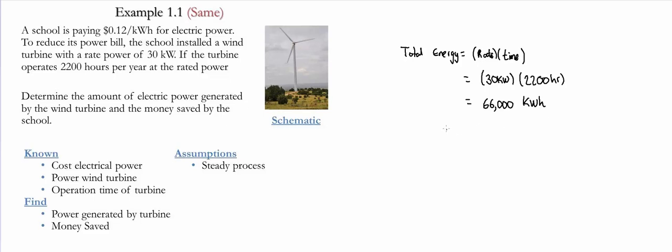So once again, this is the amount of electrical power generated by the turbine. If you think about it, the amount of energy generated by the turbine is the amount of energy that is not going to be used from the electrical power that you have in the school.